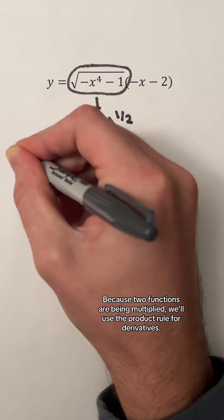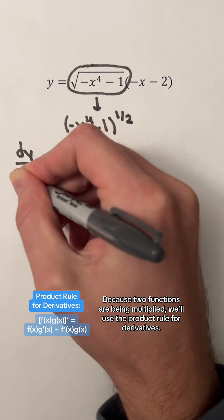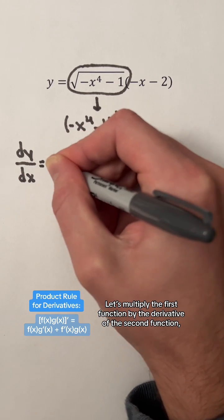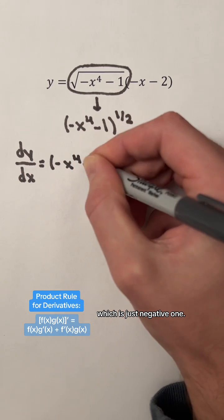Because two functions are being multiplied, we'll use the product rule for derivatives. Let's multiply the first function by the derivative of the second function, which is just negative 1.